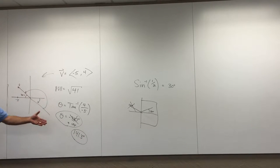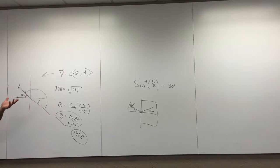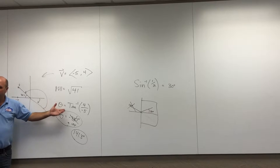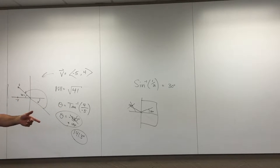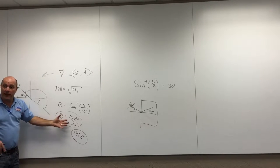This is worth discussing because it's one of the errors on the first quiz or test, and it could get you in physics class as well. The key takeaway: draw the vector, see where it ends up, and don't totally trust your calculator.